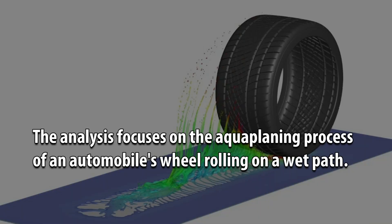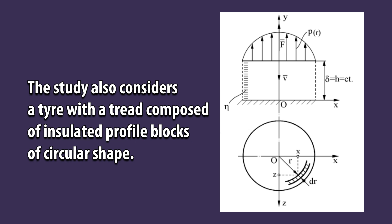The analysis focuses on the aquaplaning process of an automobile's wheel rolling on a wet path. The study also considers a tire with a tread composed of insulated profile blocks of circular shape.